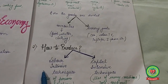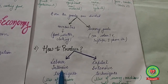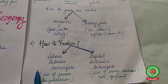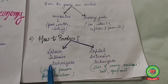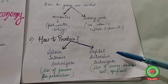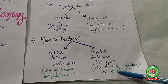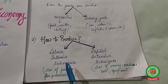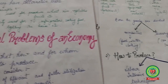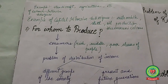The second decision regarding allocation of resources is 'how to produce.' This relates to the choice of techniques: labor intensive techniques, which use more labor than capital, or capital intensive techniques, which use more machines, tools, and equipment with less labor. The producer must decide which technique to use for producing goods and services.